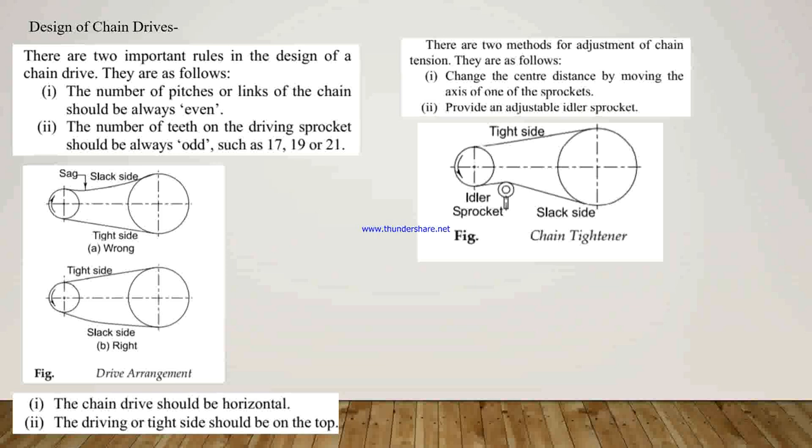Method 2: provide an adjustable idler sprocket. As shown in the figure, the idler sprocket is installed on the driven, that is, the slack side of the chain at the place where the sag is maximum.